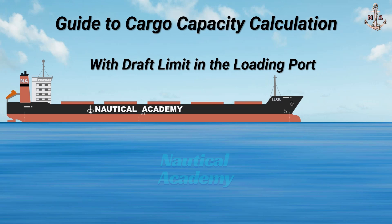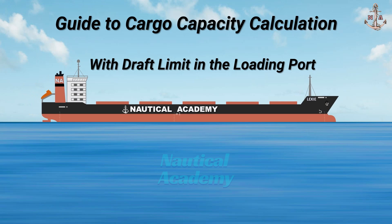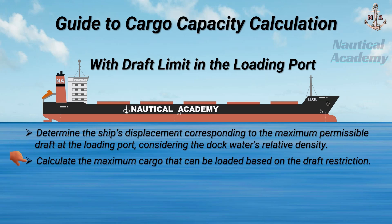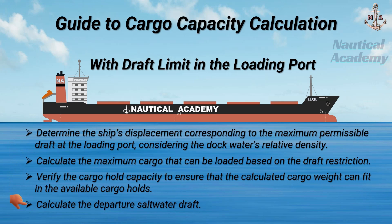This video provides a step-by-step guide for calculating the maximum cargo that can be loaded when the loading port has a draft restriction. It begins by determining the ship's displacement at the required draft in the loading port, taking into account the relative density of dock water. Next, it shows how to calculate the maximum cargo that can be loaded, taking into account the ROB or non-cargo weights. Then it verifies if this cargo can physically fit in the ship's cargo holds, and calculates the departure saltwater draft for departure planning.